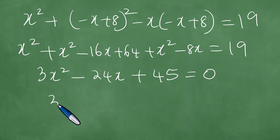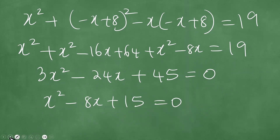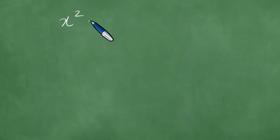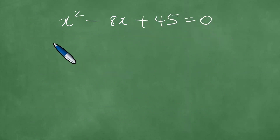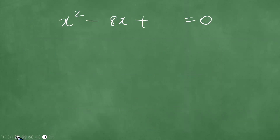We divide through by 3, and we get x squared minus 8x plus 15 equals zero. That is what we have.